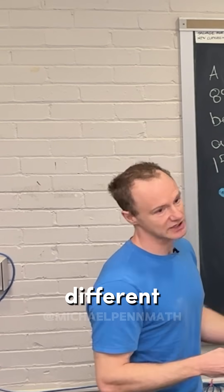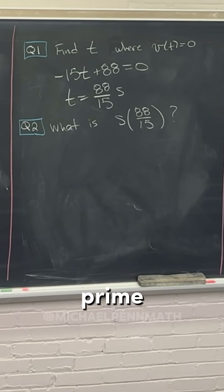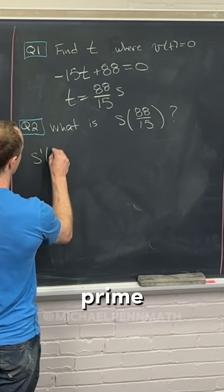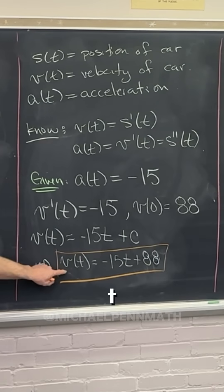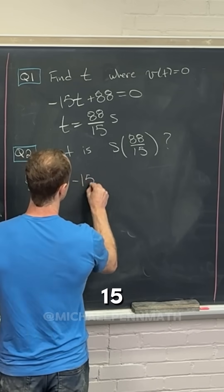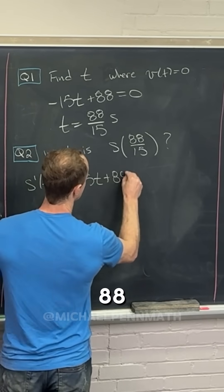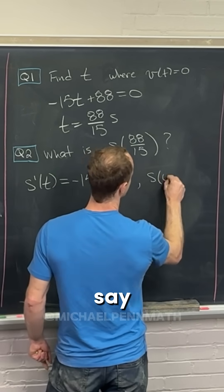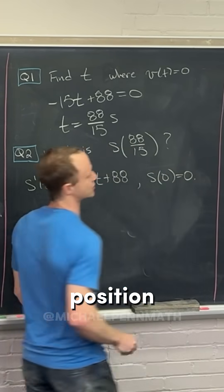But now we've got a differential equation we can solve for that. We know S prime, S prime of T equals, well, it equals V of T because change in position is velocity. So that's minus 15T plus 88. And then, well, we might as well say that the starting position is zero.